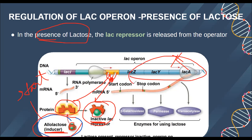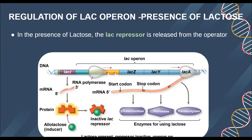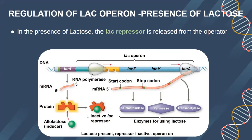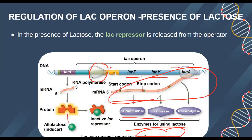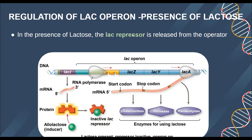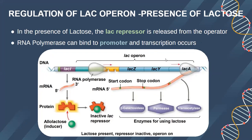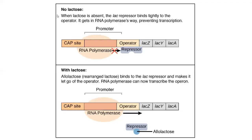Because lactose is now present, these enzymes will be required. The lactose comes and binds to the repressor, causing the repressor to become inactive. With lactose present and the repressor inactive, the operon becomes on. The RNA polymerase now binds properly, and genes lacZ, lacY, and lacA — all the enzymes — are transcribed and translated, so mRNA is made. The lac repressor is released in the presence of lactose; this lock is opened from the operator region, and RNA polymerase can bind to the promoter and transcription takes place.